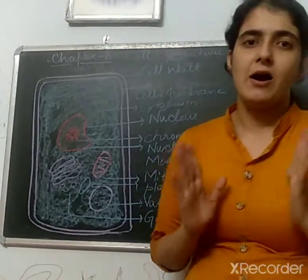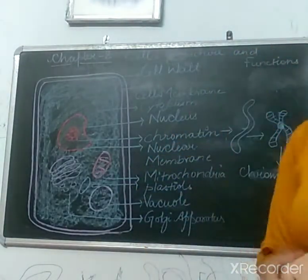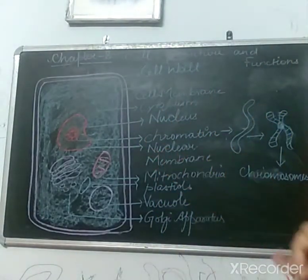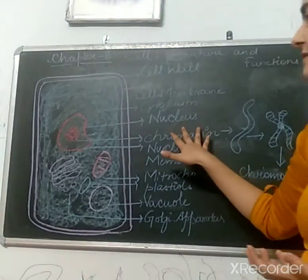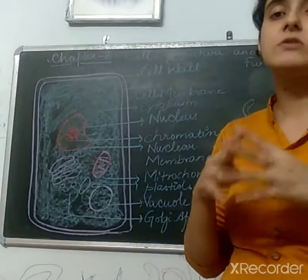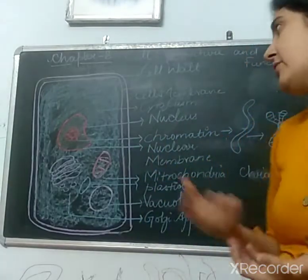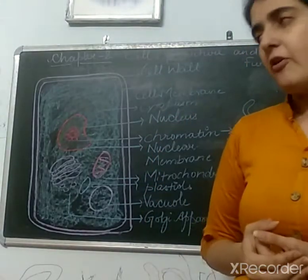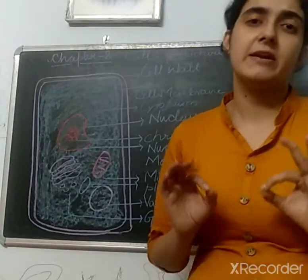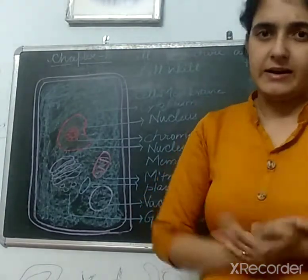The most important part of the cell is the nucleus. It is a round, dense-like structure present inside the cell and it controls all activities. That's why it is called the brain of a cell. The second crucial role of the nucleus is that it inherits characteristics — it passes traits to offspring.